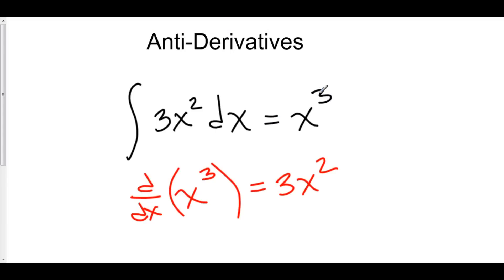But that's not all there is to it. Well, here's why. The answer could be x cubed. Or, it could be x cubed plus 1. Because the derivative of a constant is 0. The derivative of x cubed plus 1 is still 3x squared plus 0. That's still just 3x squared.